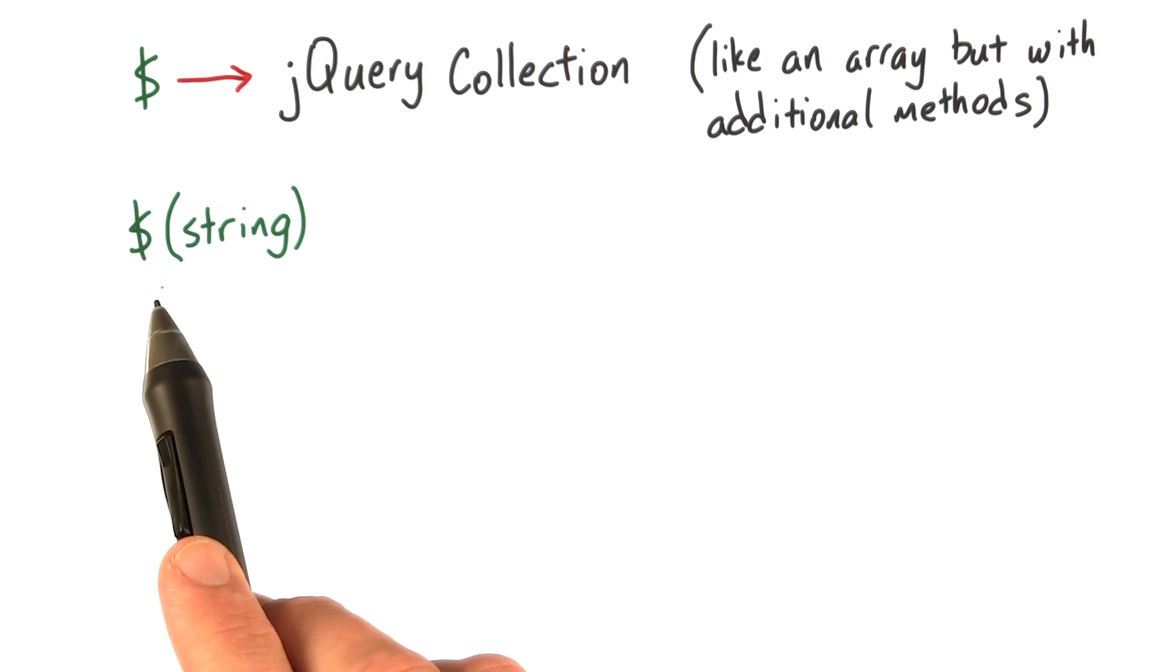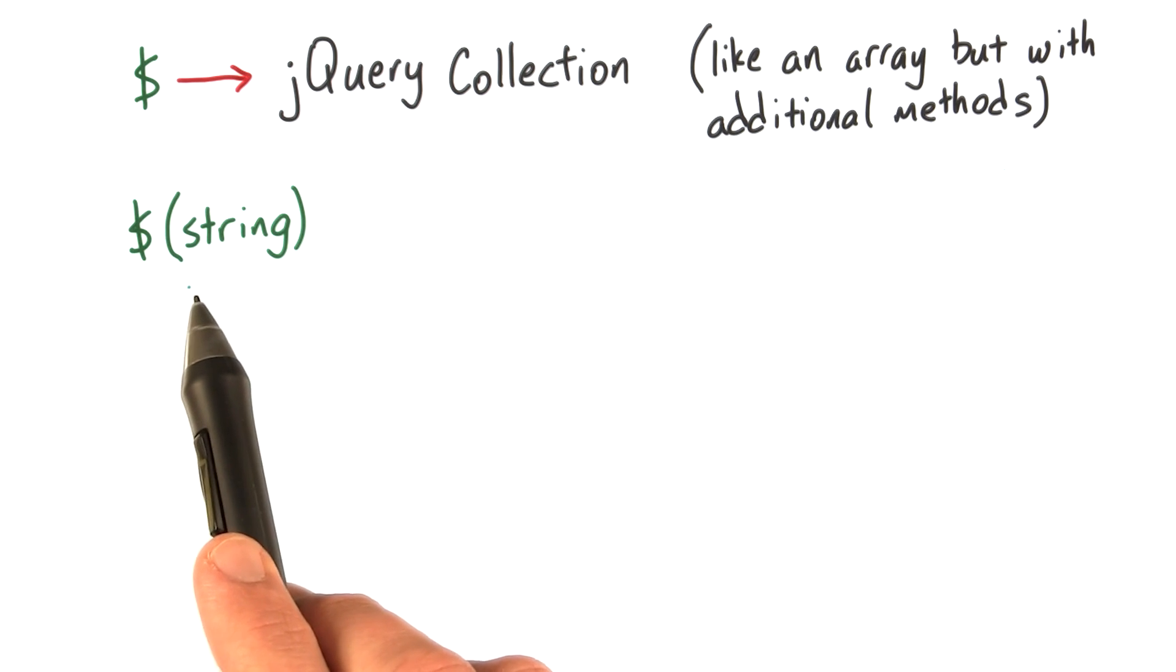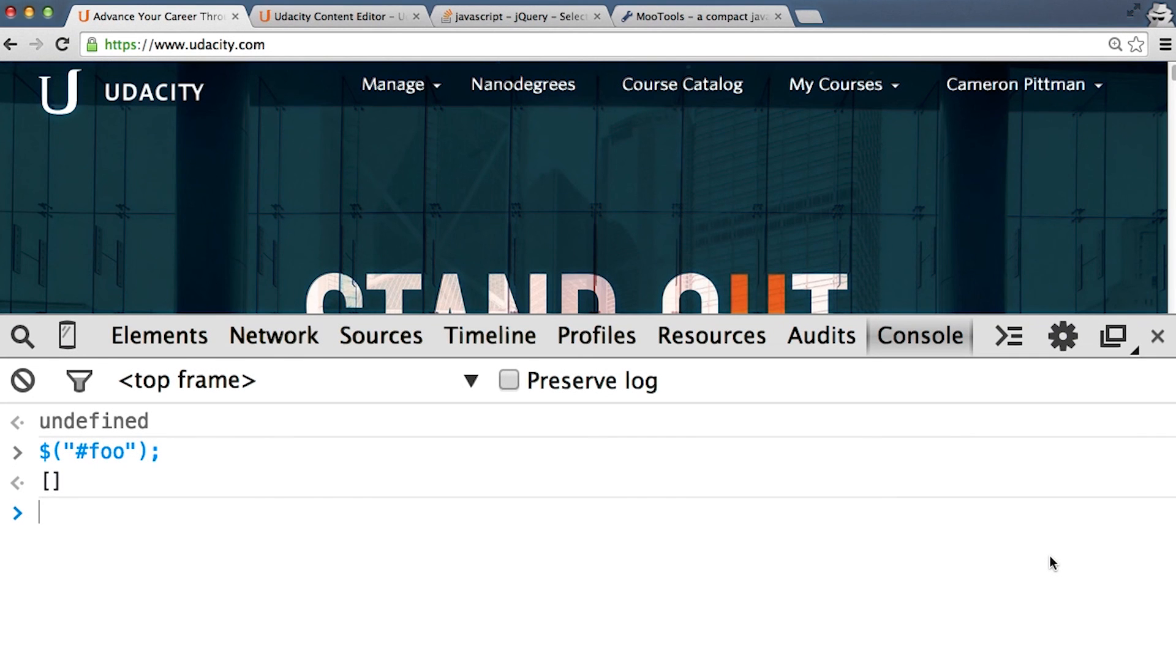You can pass strings into the jQuery objects and a jQuery collection of DOM elements will be returned. On the Udacity website, for instance, I've passed pound sign foo into the jQuery object and saw an empty array come back. All right, well, that's not too exciting. I'll come back to passing in strings like this in a moment.